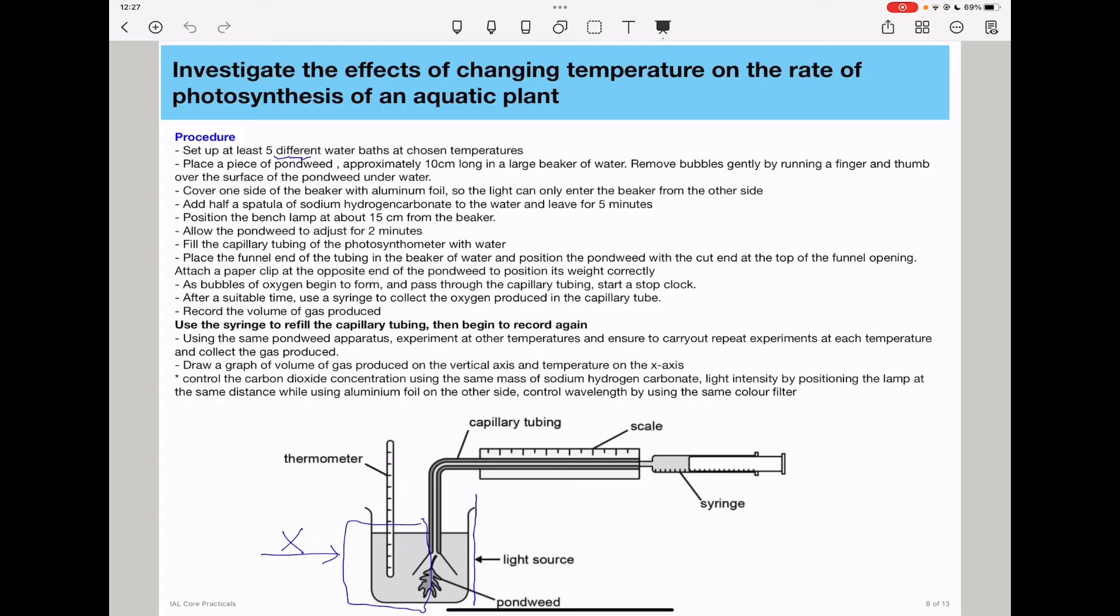You need to control the carbon dioxide concentration by using the same mass of sodium hydrogen carbonate. Light intensity can be controlled by positioning the lamp at the same distance throughout the experiment while using aluminum foil on the other side, and then control wavelength using the same color filter.